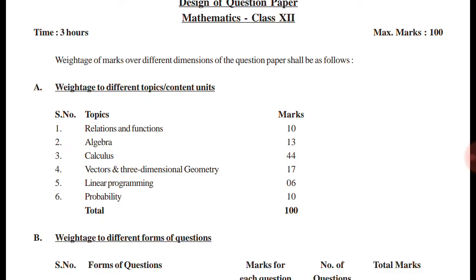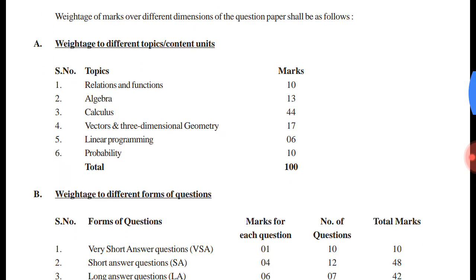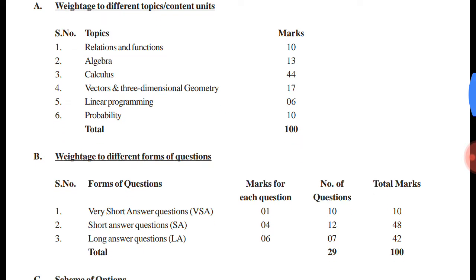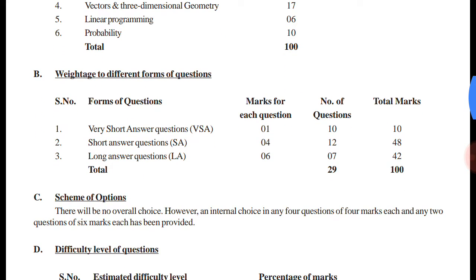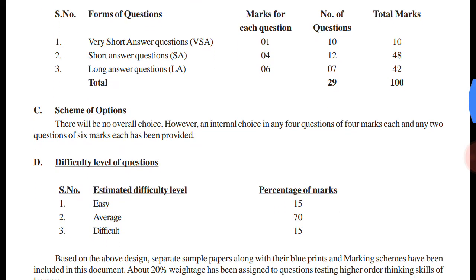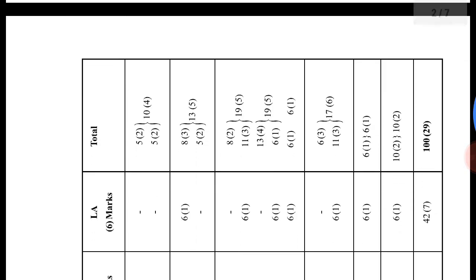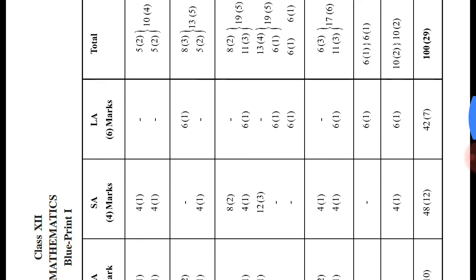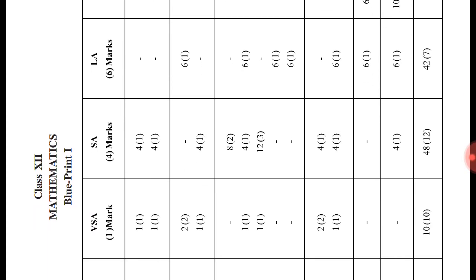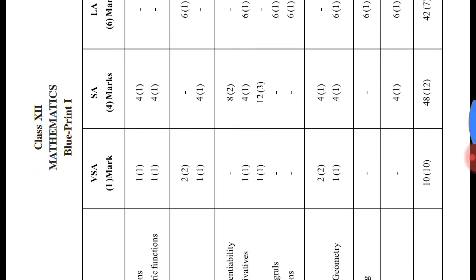So look at the paper. Firstly, it is the weightage of the marks. Weightage of the different questions in the question paper: easy will be 15, average will be 70 marks, and difficult will be 15 marks. So you can rotate your phone and you can see.